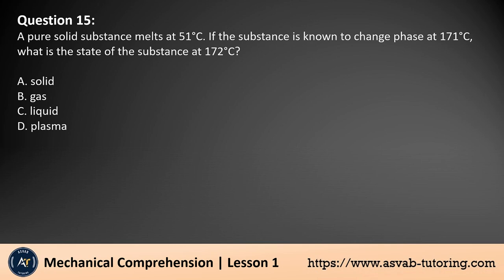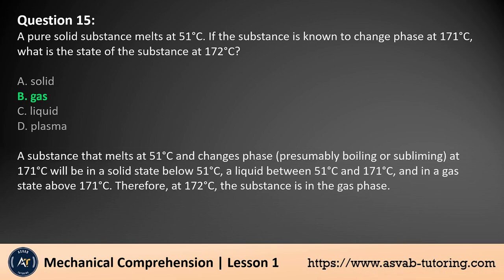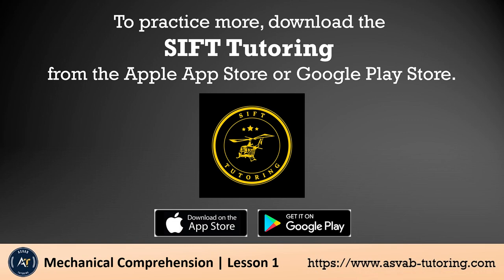Question 15. A pure solid substance melts at 51 degrees Celsius. If the substance is known to change phase at 171 degrees Celsius, what is the state of the substance at 172 degrees Celsius? The answer is B. A substance that melts at 51 degrees Celsius and changes phase, presumably boiling or subliming, at 171 degrees Celsius will be in a solid state below 51 degrees Celsius, a liquid between 51 and 171 degrees Celsius, and in a gas state above 171 degrees Celsius. Therefore, at 172 degrees Celsius, the substance is in the gas phase. To practice more, download the SIFT tutoring from the Apple App Store or Google Play Store.